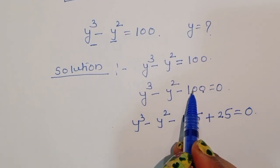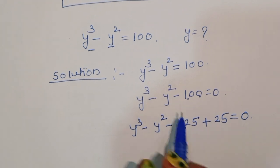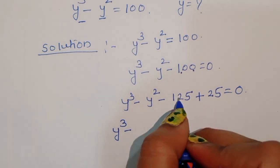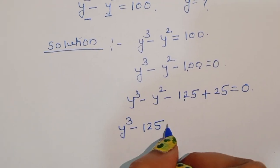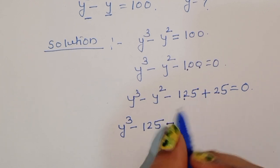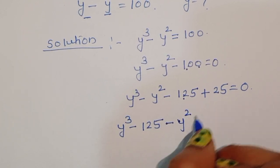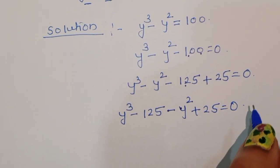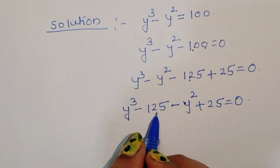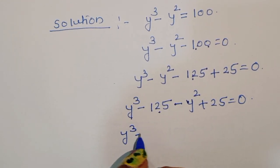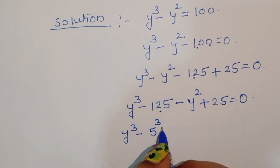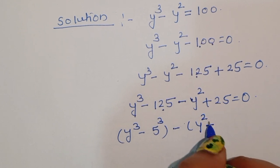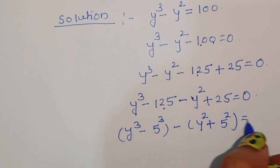Minus 125 plus 25 equals minus 100, so that checks out. Now we rearrange the terms: y cubed minus 125 minus y squared plus 25 is equal to 0. We notice y cubed minus 125 is y cubed minus 5 cubed, and minus y squared plus 25 is minus of y squared minus 5 squared, so we have y cubed minus 5 cubed minus (y squared minus 5 squared) equal to 0.